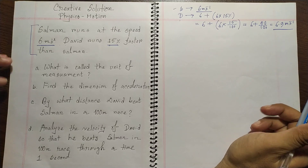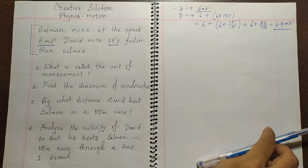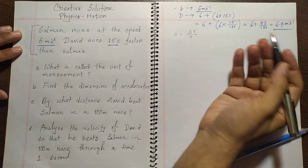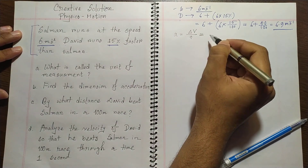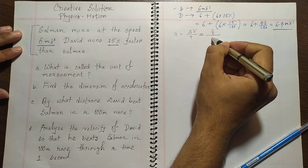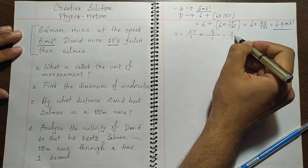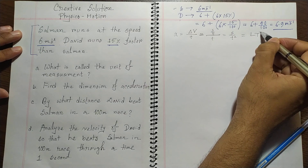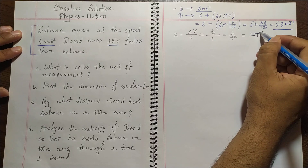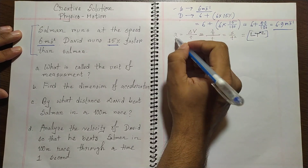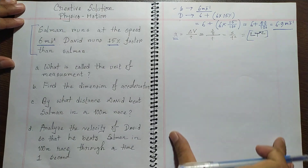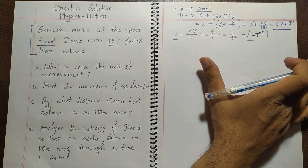The second part asks to define the dimension of acceleration. Acceleration is the change of velocity over time. Velocity is displacement over time, so acceleration is L over T squared, written as LT⁻². This is the dimension of acceleration. I explained this in more detail in a previous video on the chapter Motion.